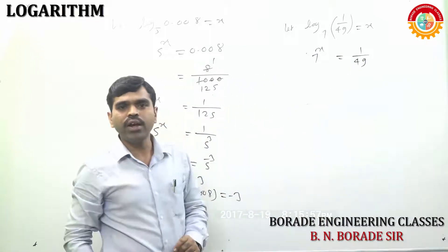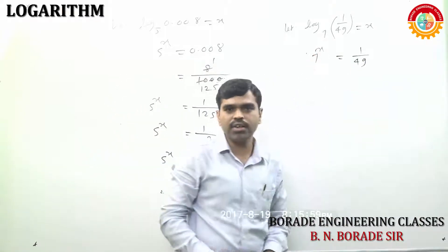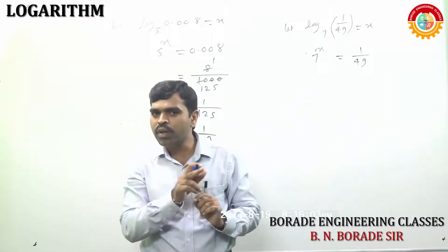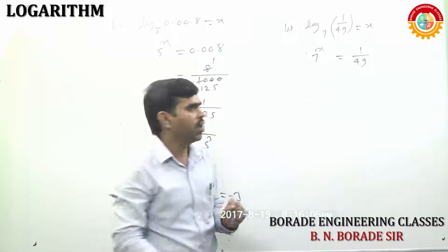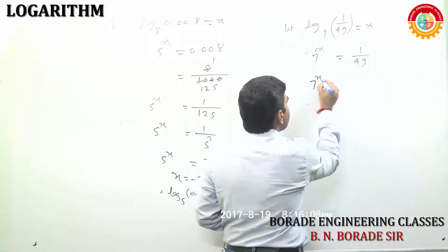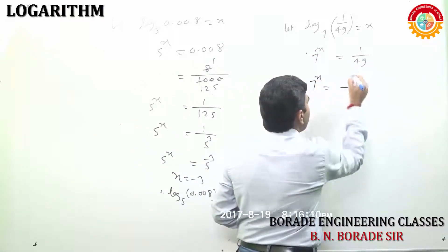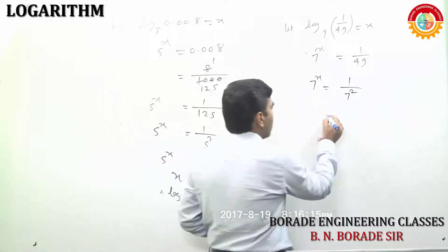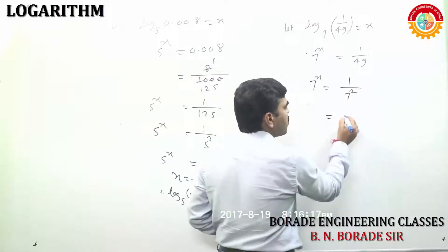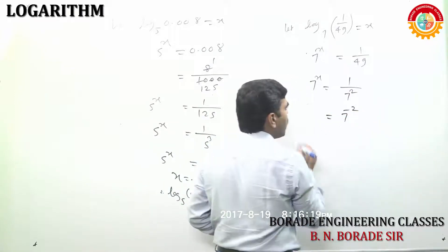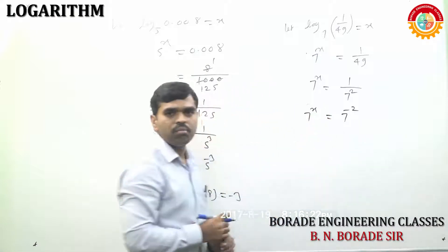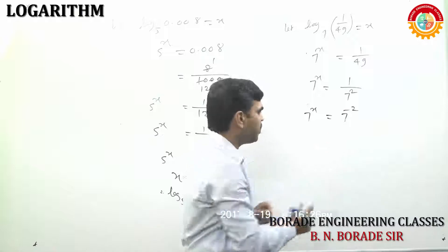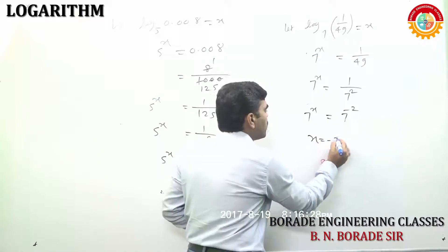Now, if we want to find out, comparison kashi karatas to base same karatas to. Then indices must be equal. So, we can write 7 raised to x equal to 1 upon 49 is 7 square. 1 upon 7 square is 7 raised to minus 2. This is 7 raised to x. Means basis are equal, indices must be same. So, x equal to minus 2.